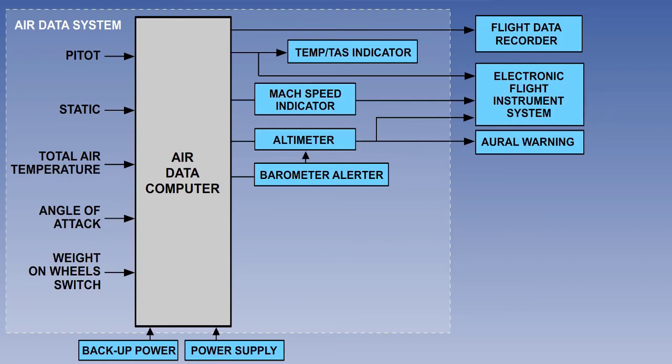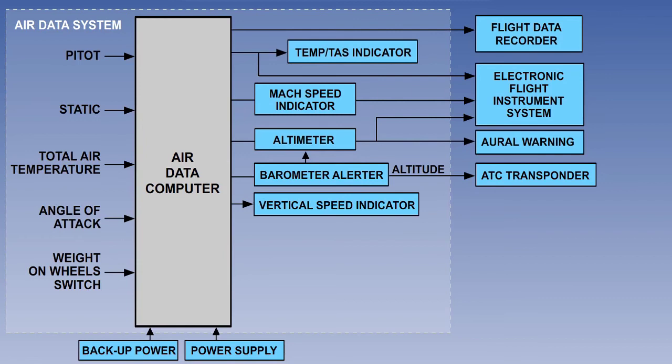A warning is sounded if a bugged altitude is exceeded. Altitude information is also passed to the height encoding transponder for air traffic control purposes. There is an output to the direct reading VSI, and the same information is also fed to the EFIS. There will also be both an overspeed and an underspeed aural warning system. The stall warning system is decoupled when the aircraft is on the ground, which explains the need for the weight on wheels switch.